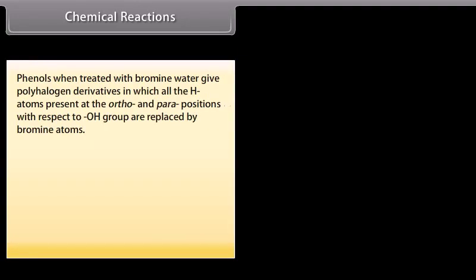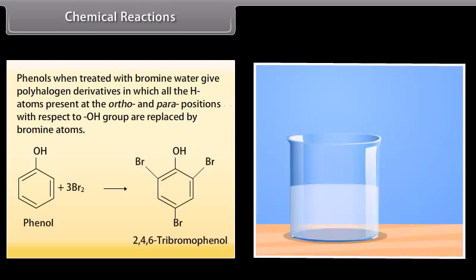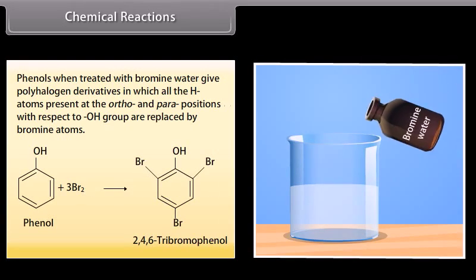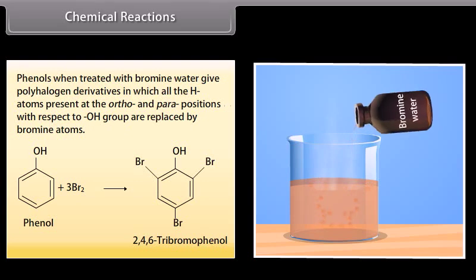Phenols, when treated with bromine water, give polyhalogen derivatives in which all the hydrogen atoms present at the ortho- and para-positions with respect to the hydroxyl group are replaced by bromine atoms. Phenols react with bromine water to form 2,4,6-tribromophenol.